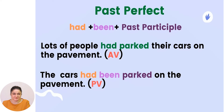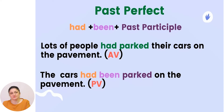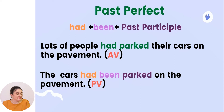Past perfect. If you want to change past perfect, you have to use the past simple form of the verb 'have', which is 'had', plus 'been', plus the past participle. Example: 'Lots of people had parked their cars on the pavement.' becomes 'The cars had been parked on the pavement.' The cars suffered the action — they were parked.